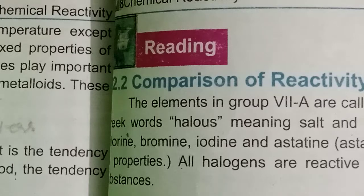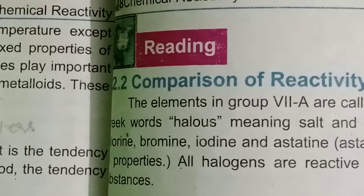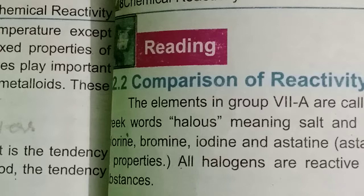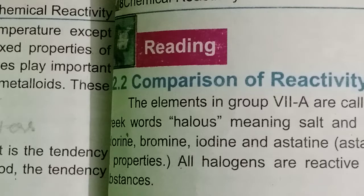This is their location in the periodic table. They have electronegative character — their ability to gain electrons to form anions. They are found in diatomic form: F₂, Cl₂, Br₂, and I₂.